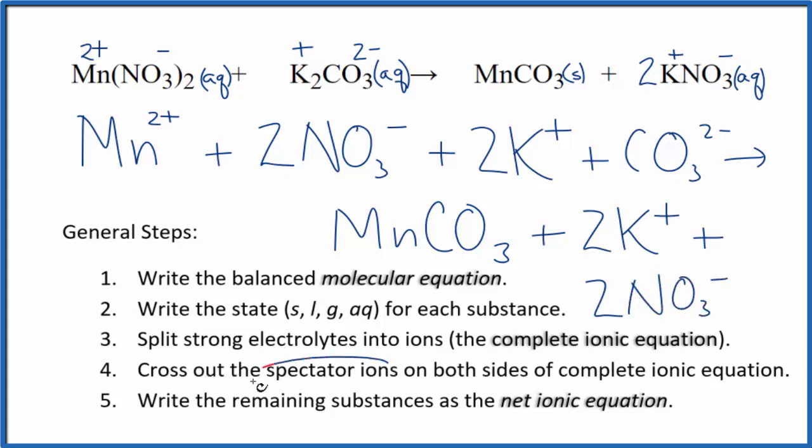Now we can cross out the spectator ions. They're on both sides of that complete ionic equation. I can see here in the reactants I have two nitrate ions, and in the products I have two nitrate ions. These are spectator ions, and we can cross those out.